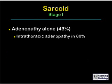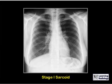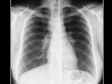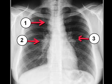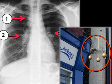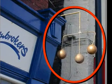Stage 1 sarcoid is adenopathy alone. It is almost always bilateral hilar and right paratracheal adenopathy. This has been called the 1-2-3 sign, the pawnbroker sign, or garland sign. This is a frontal radiograph of a patient with stage 1 sarcoid. There is a soft tissue density in the right paratracheal area, enlargement of the right hilum, and enlargement of the left hilum. This is an example of the pawnbroker sign, which resembles the three brass balls hanging outside a pawnbroker shop.